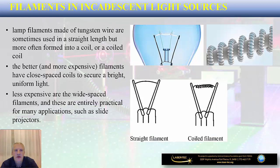This slide further describes the lamp filament. As already mentioned, lamp filaments are made out of tungsten wire, and sometimes they are used in a straight length, but very often they are formed into a coil in order to increase the luminescence of a light bulb. The longer the filament is, the better its ability to produce brighter light, which is why filaments are often formed into a coil.